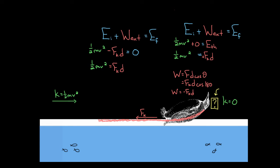So long story short, you can basically just think about the thermal energy generated by friction as FkD. This is a formula that lets you solve for the amount of thermal energy generated when two surfaces rub against each other. The force of kinetic friction equals the coefficient of kinetic friction times the normal force, so we can rewrite the thermal energy term as mu_K times Fn times D.